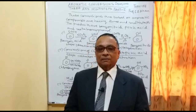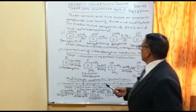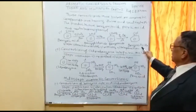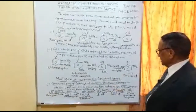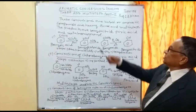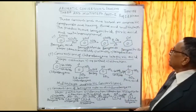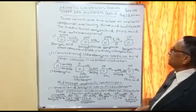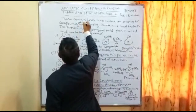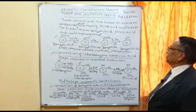Here I am discussing one by one. First, how benzoic acid is converted into benzonitrile, then chlorobenzene is converted into picric acid, and benzene is converted into meta-dichlorobenzene. These conversions are based on aromatic compounds having three and multi steps. The products are benzonitrile, picric acid, and meta-bromophenol.